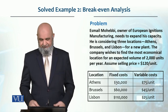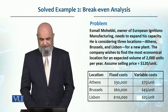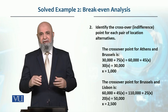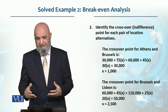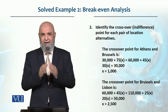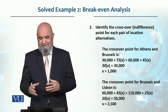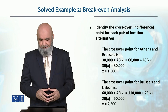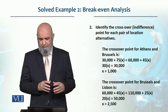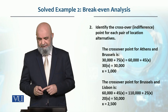Based on this data, we have to decide which country to locate this plant in. In the first step, we have to identify the crossover point, which is also called the indifference point. We set up the total cost equation: 30,000 plus 75 multiplied by x number of units.